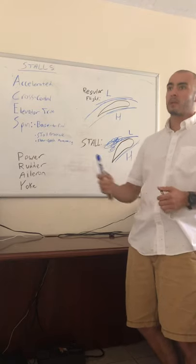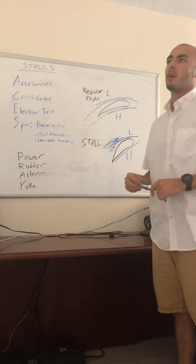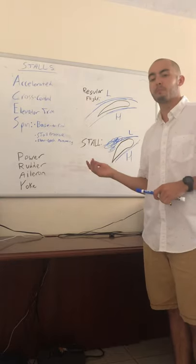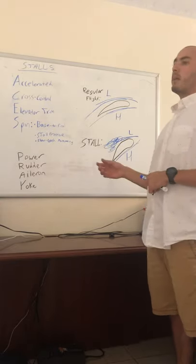Students might go and set themselves into a power on stall and they don't add the appropriate rudder to compensate for P-factor, and then you go right into that stall.